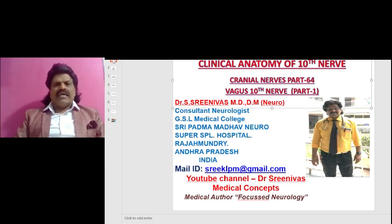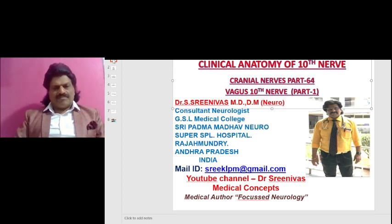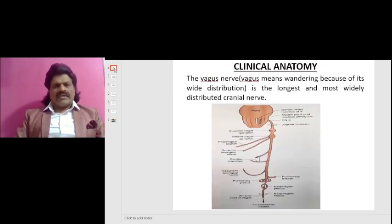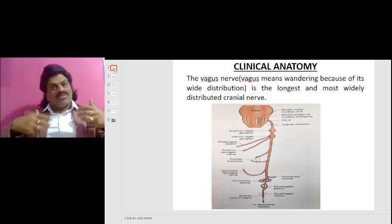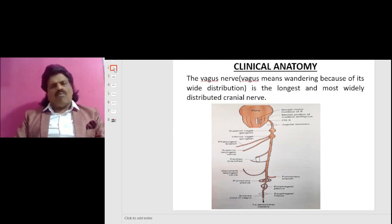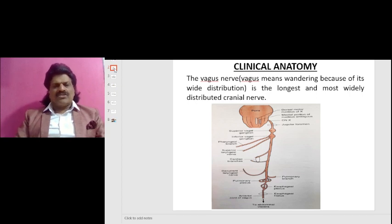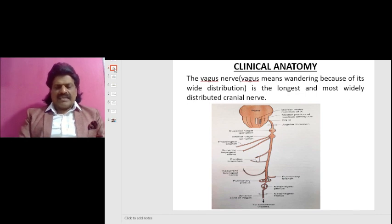That is the Vagus nerve — cranial nerve 10, part 1: the clinical anatomy of the 10th nerve. What is the meaning of 'vagus'? Vagus means wandering, because of its wide distribution. The Vagus nerve is the longest and most widely distributed cranial nerve. Here you can see the distribution of the 10th nerve, the longest cranial nerve.